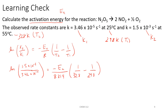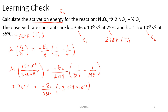We can figure out what the ln of that fraction is on the left-hand side of the equation, and that comes out to 3.7694. That equals negative Ea over our R value of 8.314. We can also figure out what the value is for our difference in temperatures, and that comes out to be negative 3.069 times 10 to the negative 4th. So now we want to isolate our activation energy Ea, and we divide both sides of the equation by negative 3.069 times 10 to the negative 4th. It will cancel on the right-hand side and move over to the left.